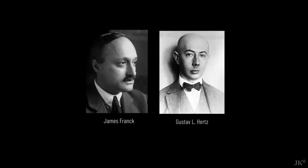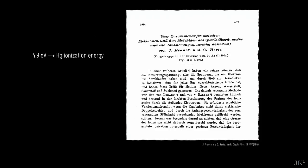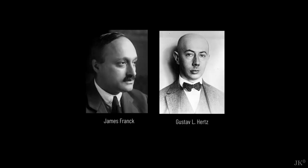Franck and Hertz interpreted the 4.9 volts as the energy needed to ionize the mercury atoms and published their results in April of 1914. However, all their measurements had shown the ionization energy of mercury to be over 10 electron volts. Therefore, something was wrong with their interpretation. But they did notice something very important.